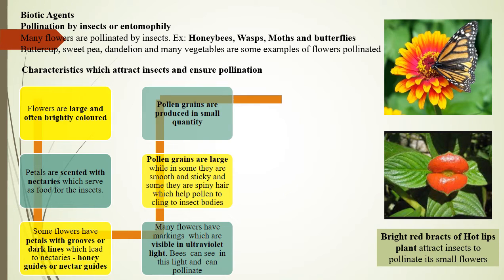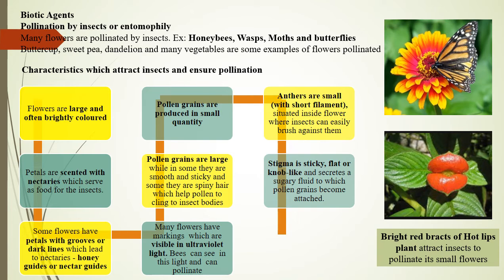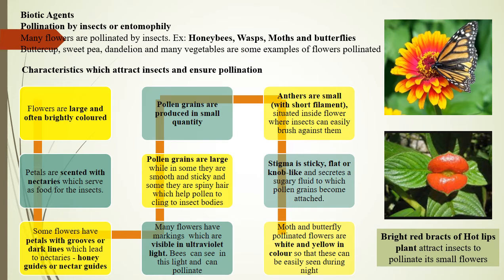Pollen grains of insect-pollinated flowers are produced in small quantity. Anthers are small with short filaments situated inside the flower where insects can easily brush against them. The stigma is sticky, flat, or knob-like and secretes a sugary fluid to which pollen grains become attached. The stigma does not hang out from the flower. Many moth- and butterfly-pollinated flowers are white or yellow so that they can be easily seen and pollinated during the night.